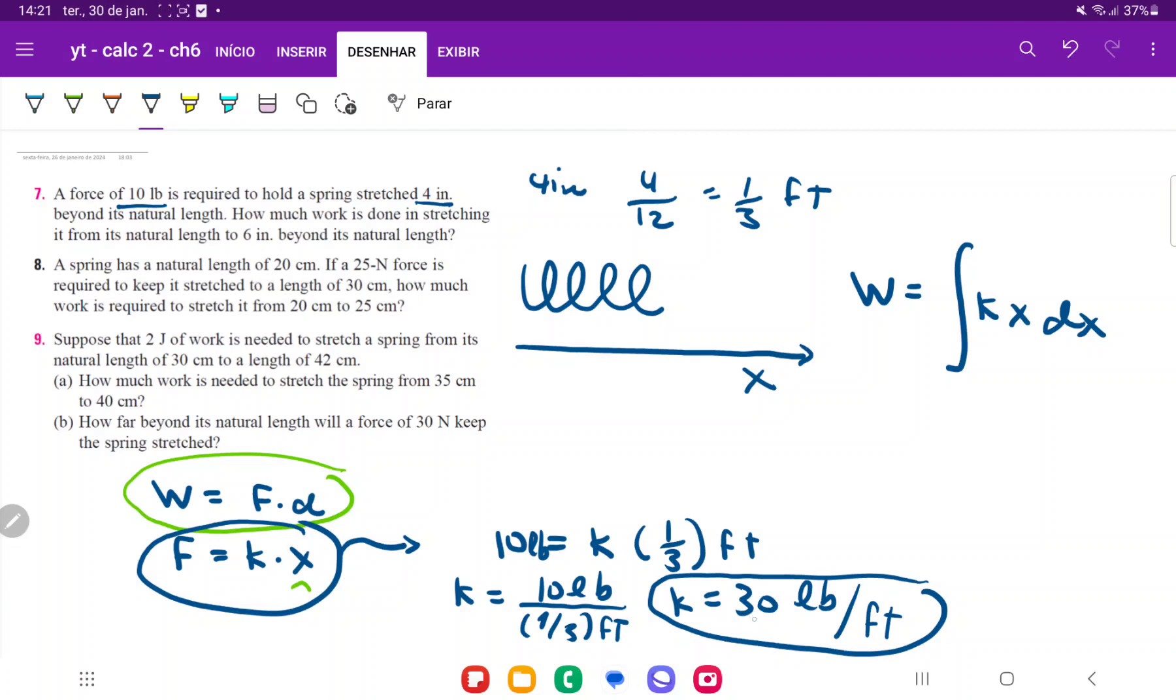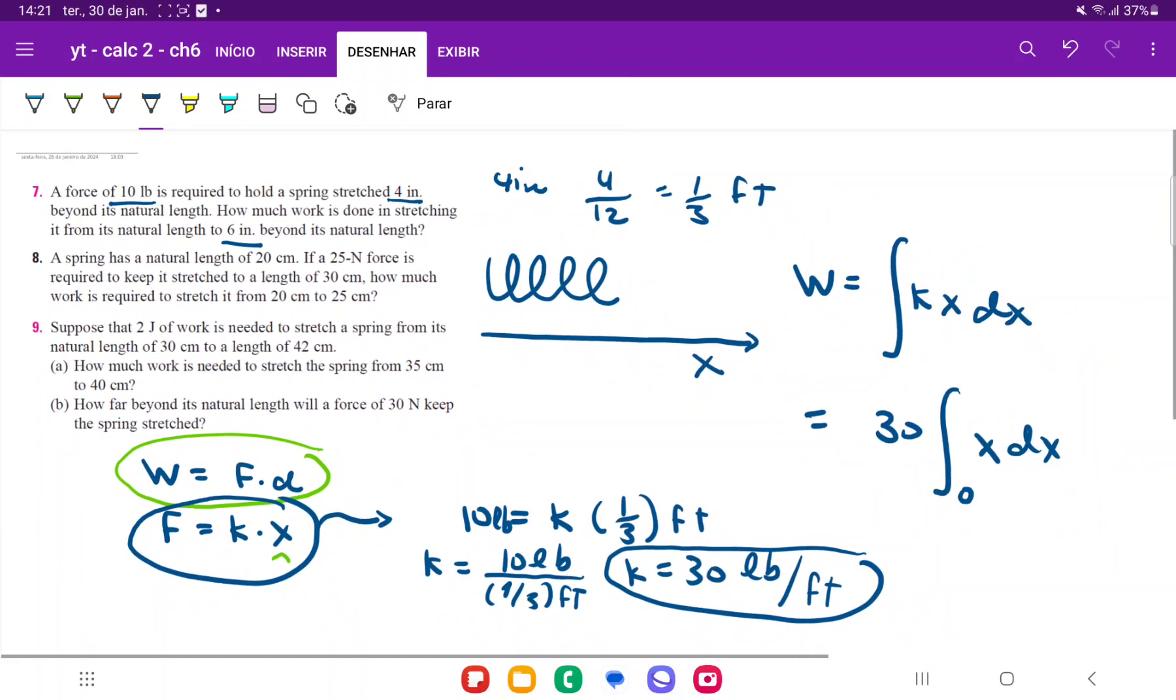But then we do have k, which is 30. So we can rewrite this as 30 times the integral of just x dx. And all that's missing for us now is to put in the boundaries. So it goes from its natural length - we're going to consider that zero is the starting point, because it has been stretched zero at its natural length - to six inches beyond its natural length. So now be careful once more, because the units that we're working with are feet, they're not inches, because force is measured in pounds and feet. So six inches is just going to be half a foot. So that's going to be half a foot here.